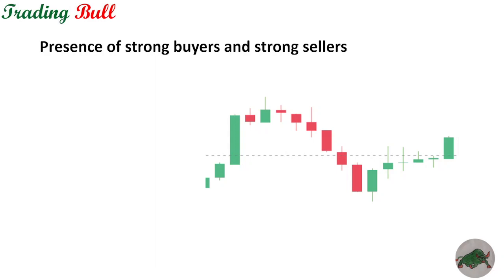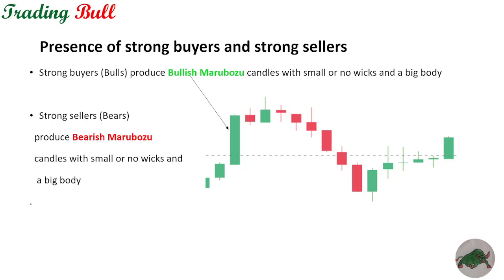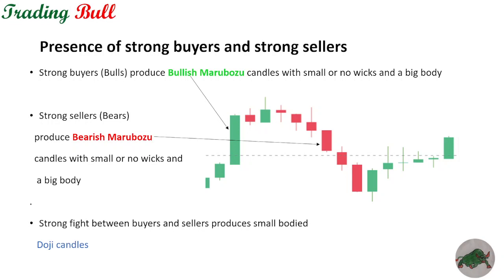By looking at candlesticks, we can predict whether strong buyers or strong sellers are present at a certain point in time. Strong buyers, also called bulls, produce bullish Marubozu candles with small or no wicks and a big body. Strong sellers, also called bears, produce bearish Marubozu candles similarly. A strong fight between buyers and sellers produces small-bodied Doji candles with long wicks, indicating indecisiveness in the market.